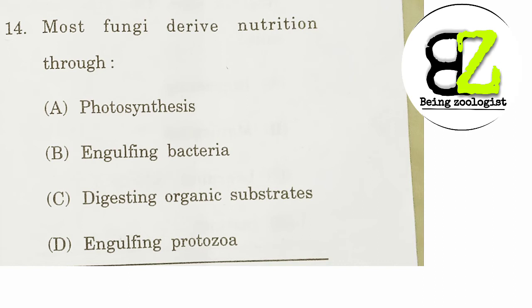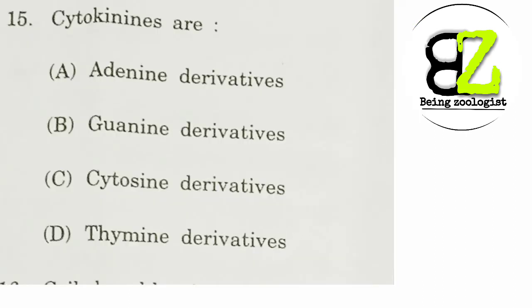Cytokinin: here, many people mistakenly think cytokinin is a cytosine derivative because cytokinin and cytosine sound similar — that is a common mistake. Remember, cytokinin is an adenine derivative, not a cytosine derivative. So our answer will be option A, not option C.